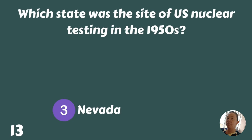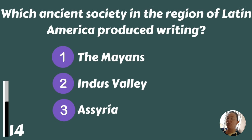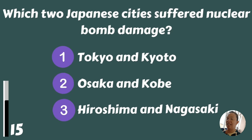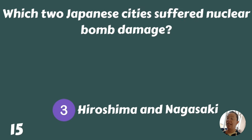Which ancient society in the region of Latin America produced writing — the Mayans, Indus Valley, or Assyria? The Mayans. Which two Japanese cities suffered nuclear bomb damage — Tokyo and Kyoto, Osaka and Kobe, or Hiroshima and Nagasaki? Hiroshima and Nagasaki.